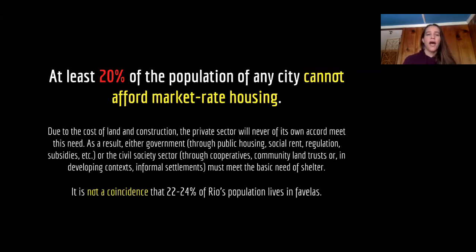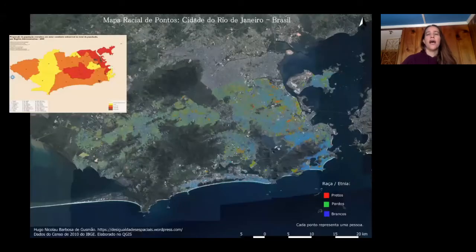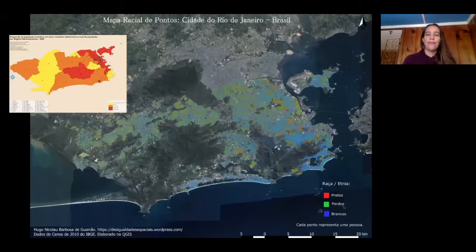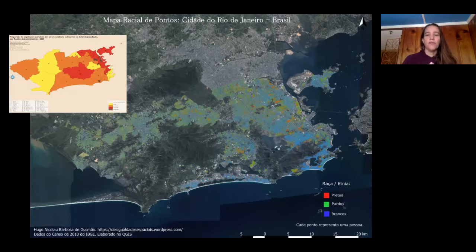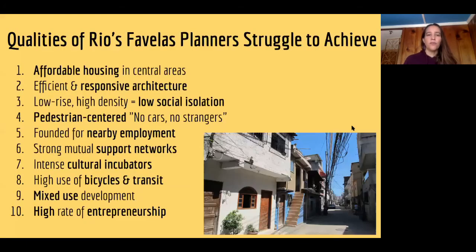There's a 20% rule you can see apply in cities around the world. At least 20% of the population of any city can't afford market-rate housing — doesn't matter where you are, this will apply. Sometimes it's much higher. Why? Because the private market won't make money off the lowest income strata. The only way to address this basic need of shelter is to provide other forms of access to housing — cooperatives, non-profits, government public housing, social rent, rent stabilization, or inclusionary zoning. But in the developing world, it's favelas — it's informal settlements, civil society informally responding to the need for shelter. It's not a coincidence that 20–24% of Rio's population lives in favelas. And going back to the beginning, Rio's racial map is almost a blueprint of the favela map — that legacy of slavery is very much present today.